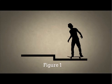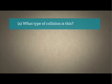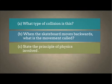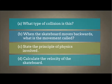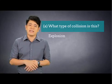Let's try another question. Figure 1 shows a boy jumping off a stationary skateboard onto the kerb. The skateboard moves backwards. Part A: what type of collision is this? To answer part A, we have to realise that before the boy jumps, both bodies are stationary. After he jumps, both bodies move in opposite directions. This is clearly an explosion.